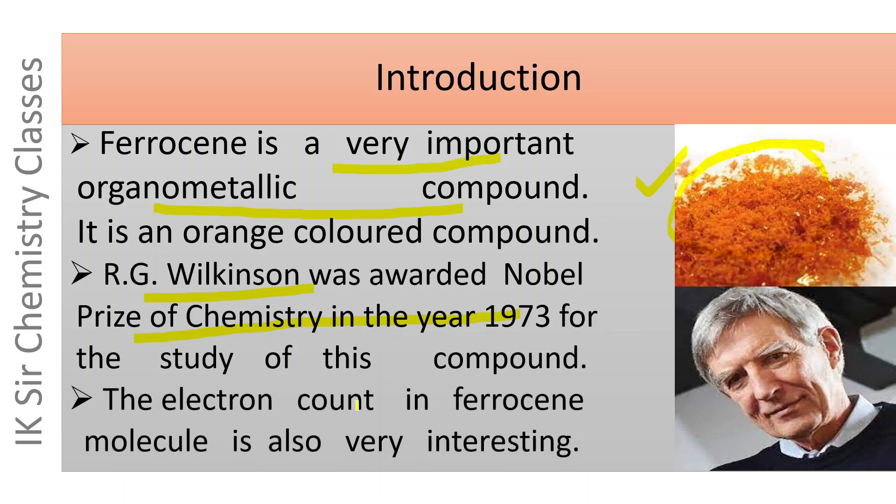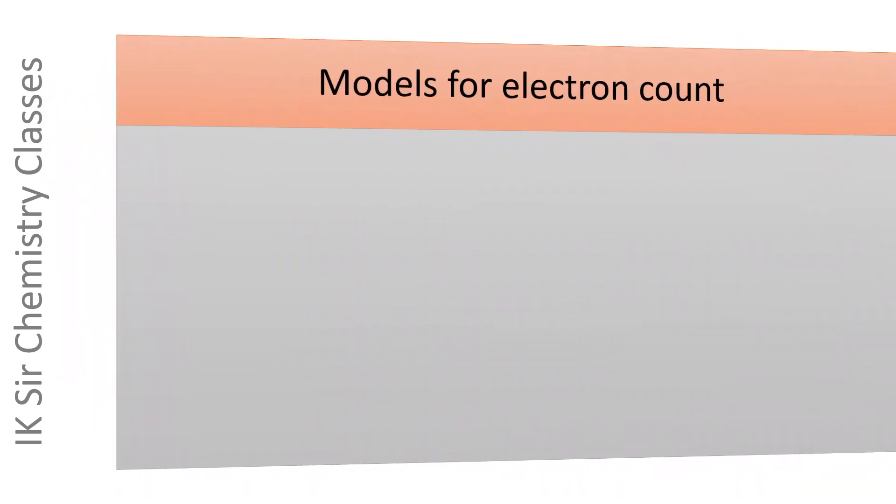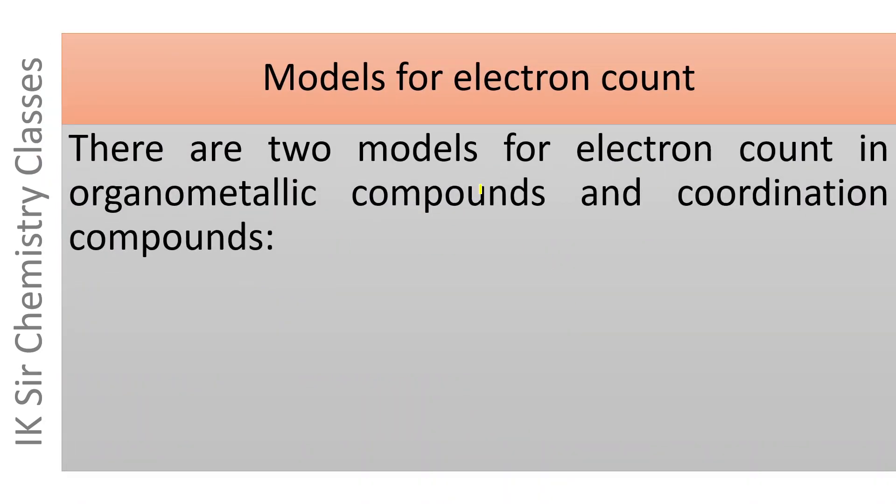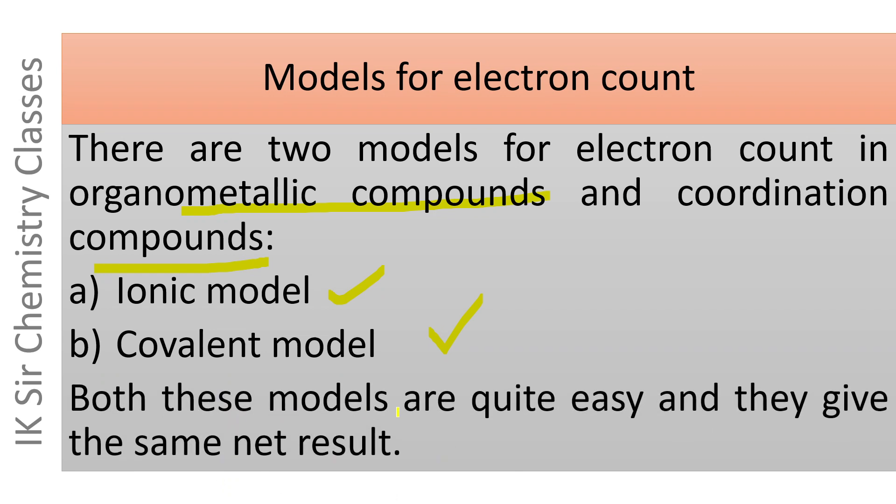The electron count in ferrocene molecule is also very interesting. There are two models for electron count in organometallic compounds and coordination compounds: ionic model and covalent model. Both these models for electron count are quite easy and they give the same net result.